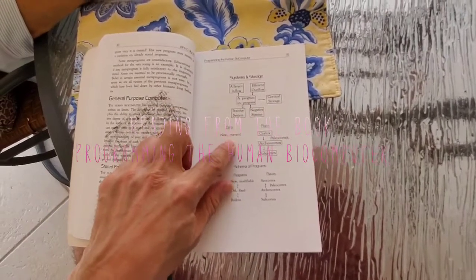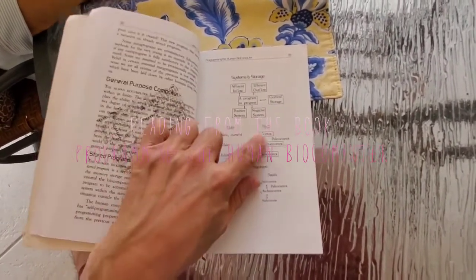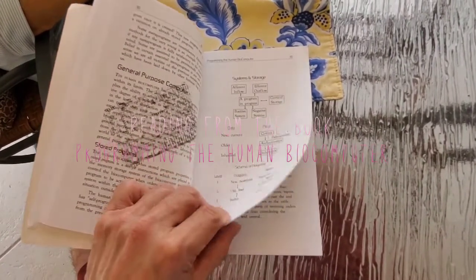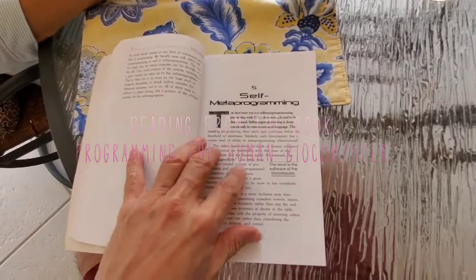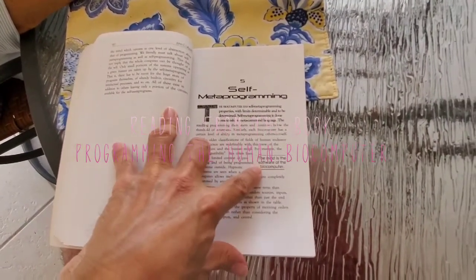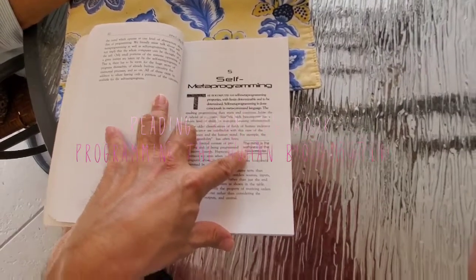Cortical storage data - new, current, older inherited place. Schema of programs, self metaprogramming. The mind is the software of the biocomputer.